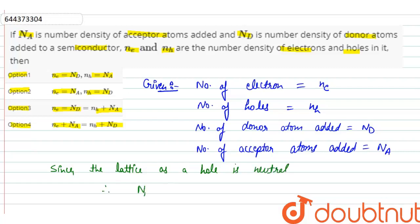therefore, Na plus NH is equal to ND plus Ne.